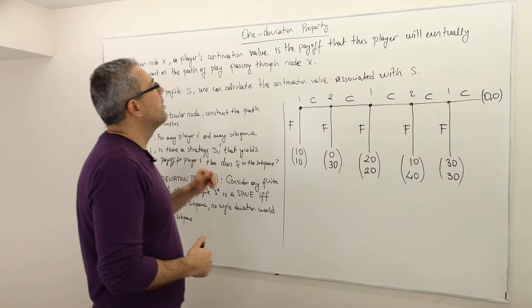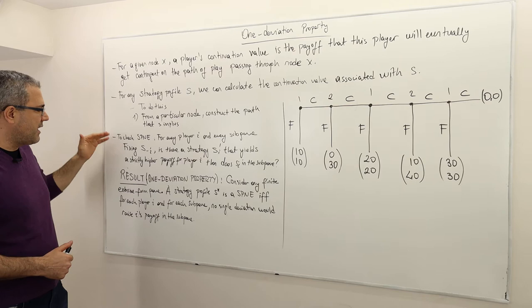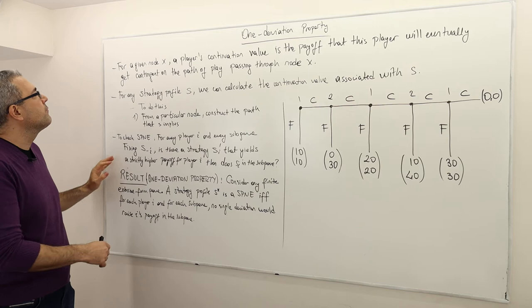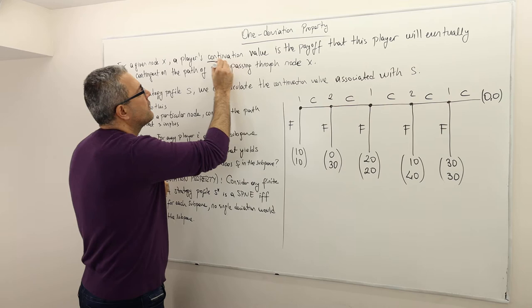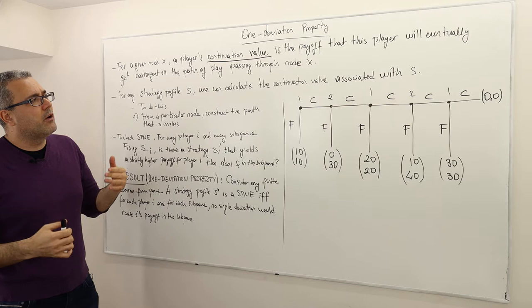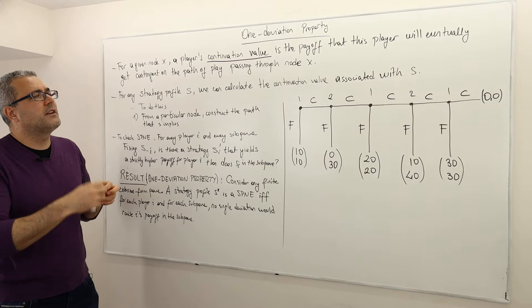I'm going to start with some definitions and then define what we mean by the one deviation property — it's actually a result. Here's the first note: for a given decision node X, a player's continuation value is the payoff that this player will eventually get, contingent on the path of play passing through node X.